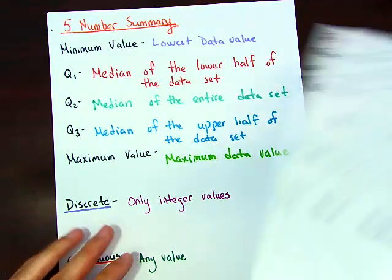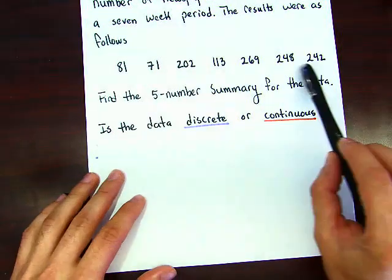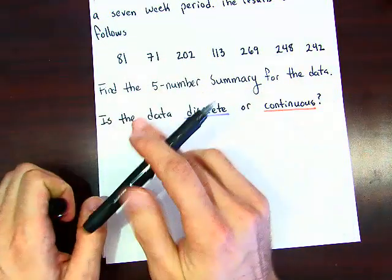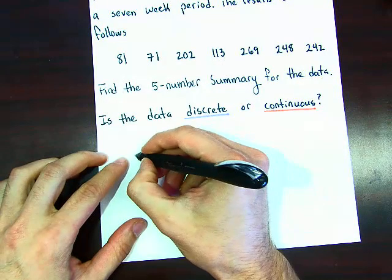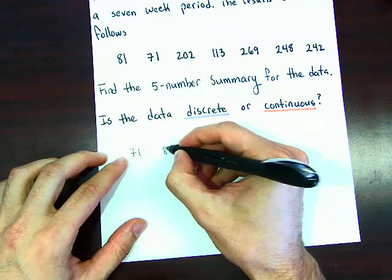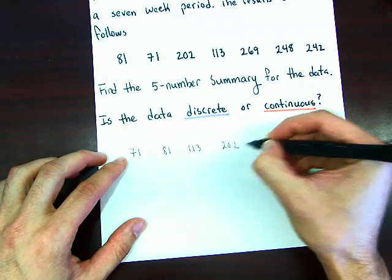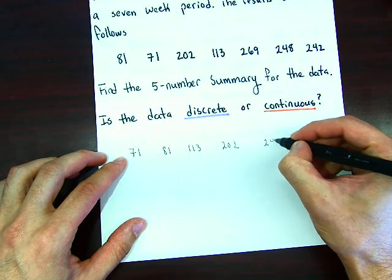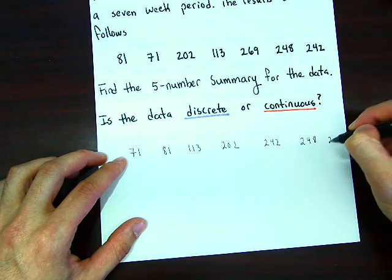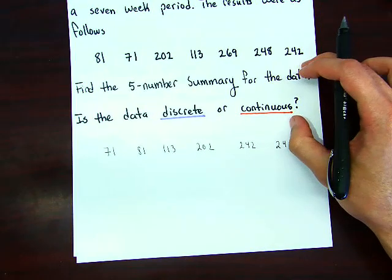Let's go through the problem step by step. The first thing we want to do is put the data values in order. The lowest value is 71, then 81, 113, 202, 242, 248, and 269.